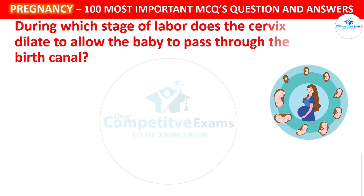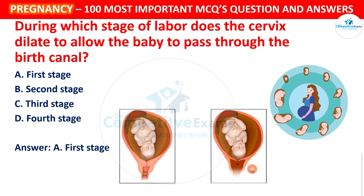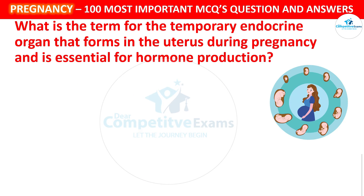Next question: During which stage of labor does the cervix dilate to allow the baby to pass through the birth canal? Your options: First stage, Second stage, Third stage, or Fourth stage. The correct answer is First stage. The first stage of labor involves cervical dilation and effacement to prepare for childbirth.